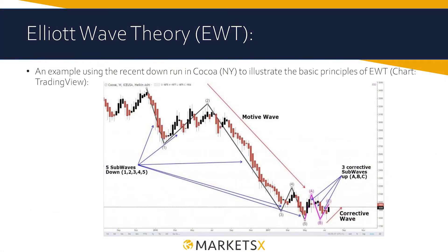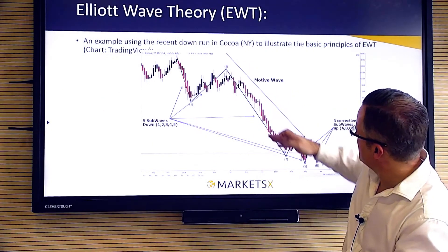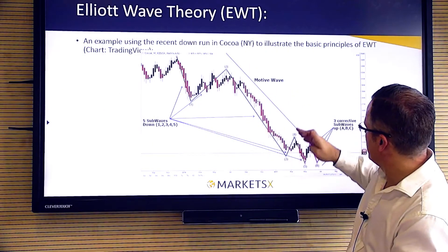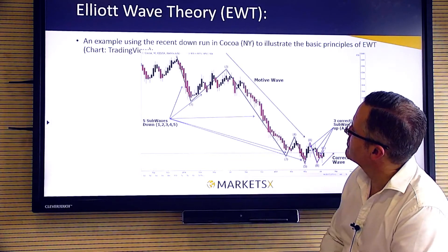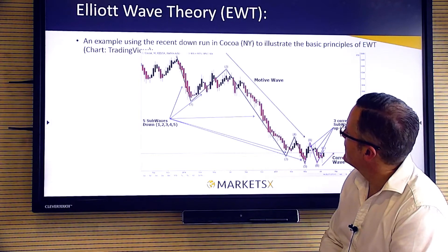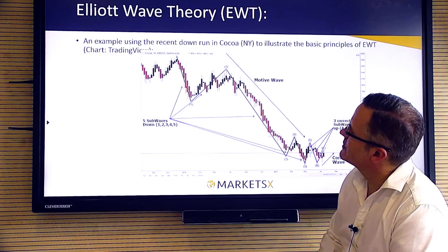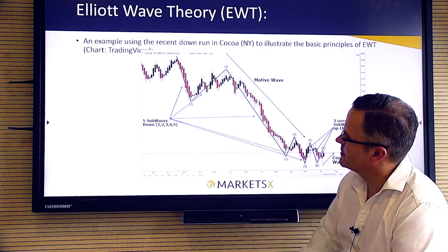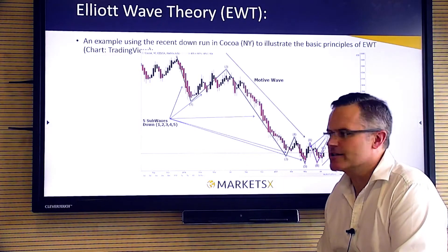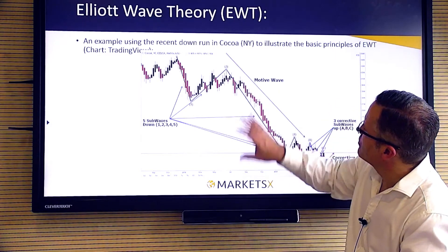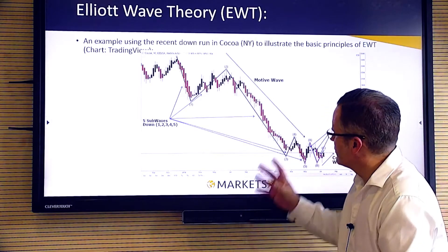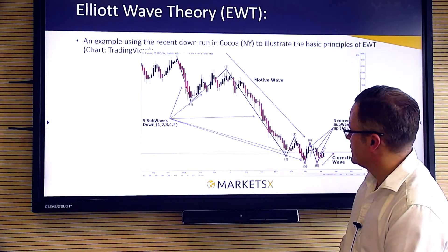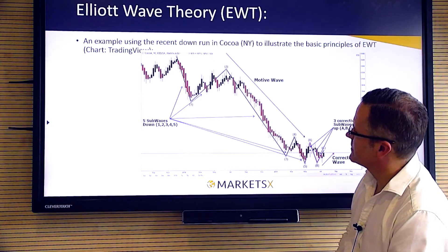Here's a typical example on Cocoa. We've got our different waves: one, two, three, four, five, and then we've got a corrective wave at the bottom — just a simple example of how you'd lay that out on your chart. And you'll get on software and charting packages these days tools that will help you structure that wave pattern and even predict future moves, waves and cycles.